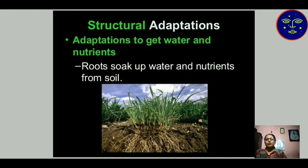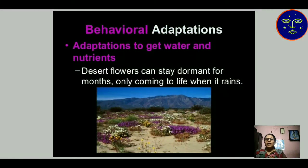In structural adaptation for getting water and nutrients: roots work to soak up water and nutrients from the soil and deliver them to the leaves. In behavioral adaptation: in the desert, flowers can stay dormant for months. Only when rain comes does life of the flowers start. This is the behavioral adaptation of desert plants.